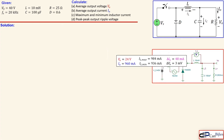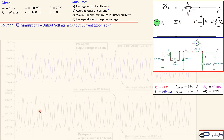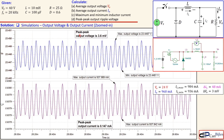In the zoomed view of output voltage and output current, the peak-to-peak output voltage ripple is 3.6 millivolts — we calculated 3 millivolts, so there is some error but still very close. For the output current, the peak-to-peak value gives 0.147 milliamps or 147 microamps.